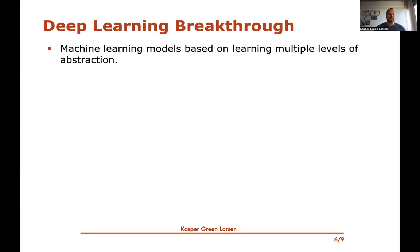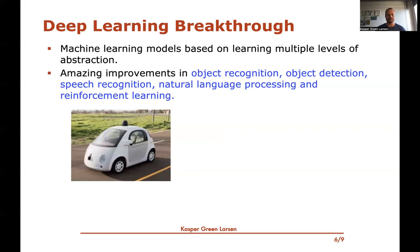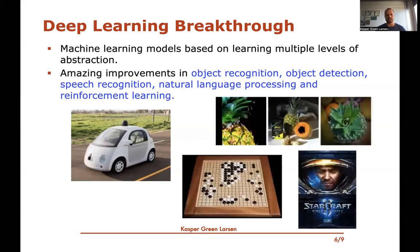The basic idea in deep learning is that it's a machine learning model that learns in several levels of abstraction — going through several rounds of learning more and more advanced features of the data. This has really led to improvements you've seen in everyday life: object recognition and detection, speech recognition, natural language processing, reinforcement learning, self-driving cars, playing games like Go and StarCraft. The performance we can achieve is made possible by these deep learning models.